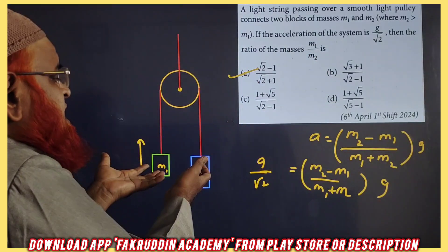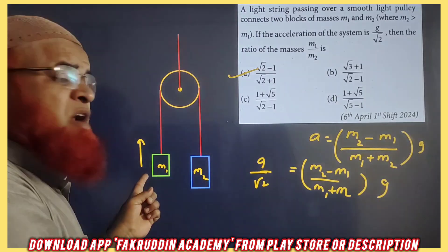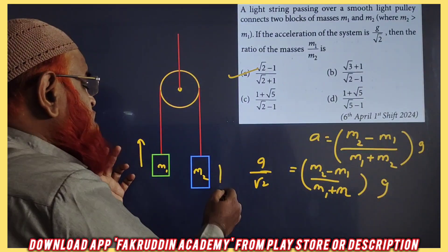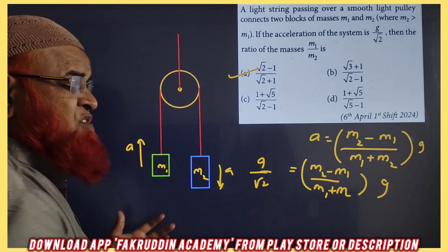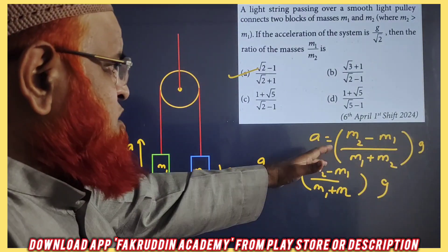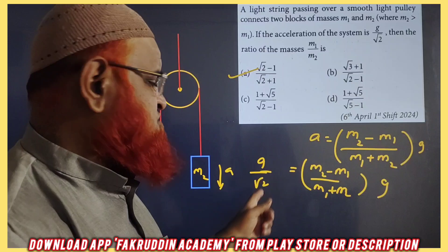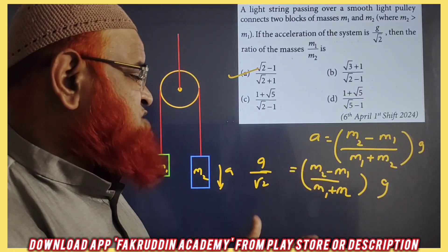And when it is a pulley, it is a pulley in which masses M2 and M1 are there. M2 is dominating. That means, coming down with an acceleration A, it is moving up with an acceleration A. So it is asking us to find out, if acceleration is G by root 2, what is the ratio of M1 and M2?